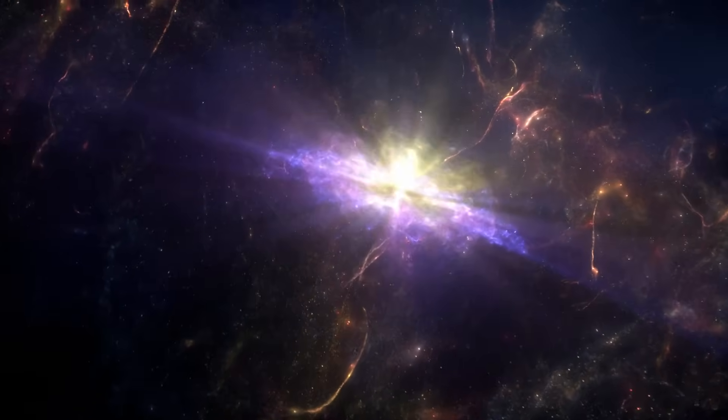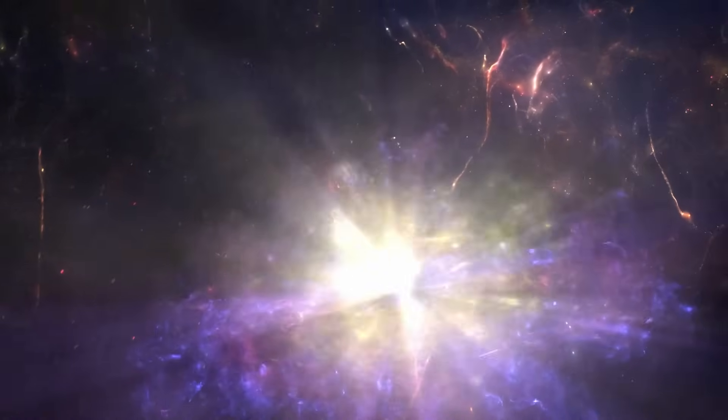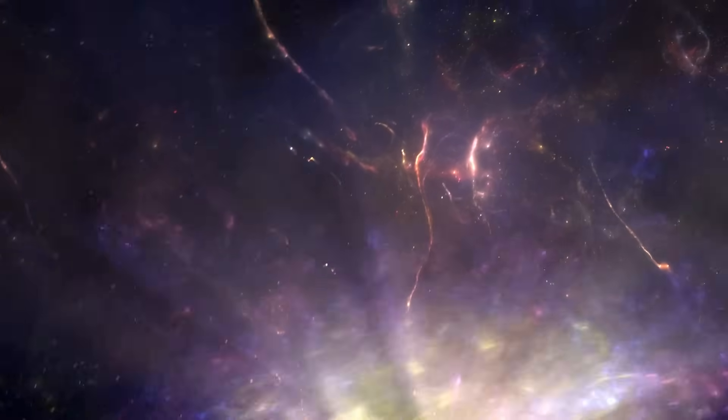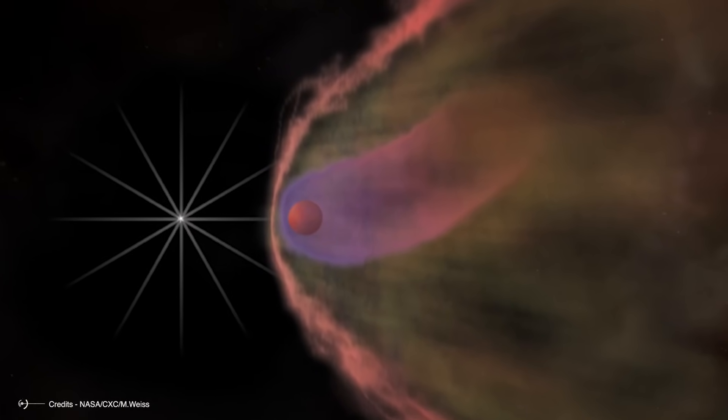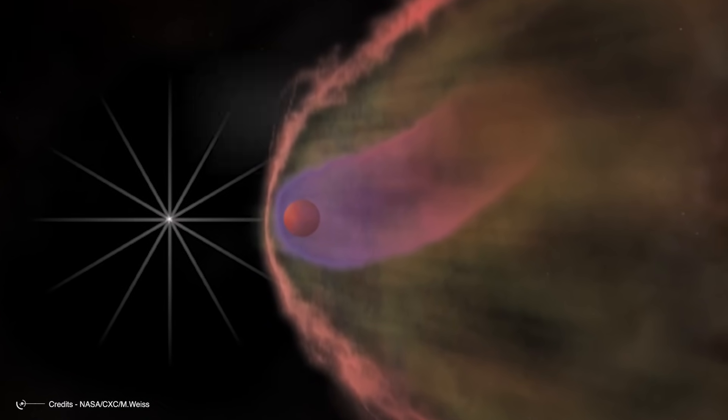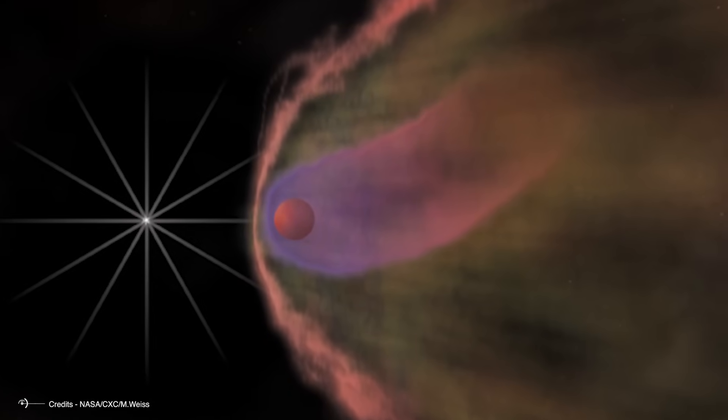What makes J0952-0607's situation particularly alarming is the mechanism driving it toward collapse. This neutron star belongs to a rare and fascinating class of binary systems known as Black Widow Pulsars, named after the notorious spiders that devour their mates.